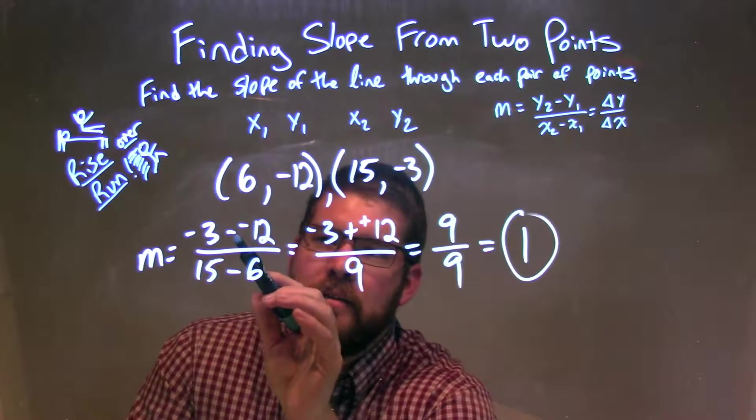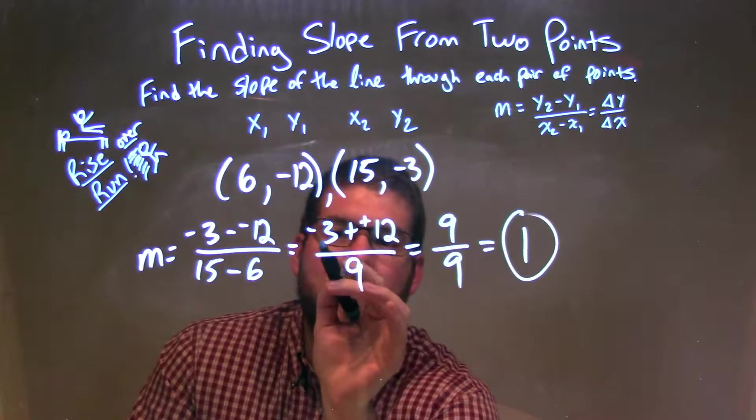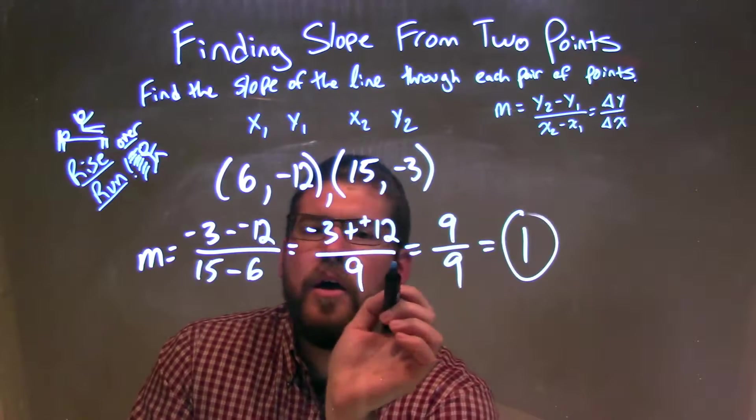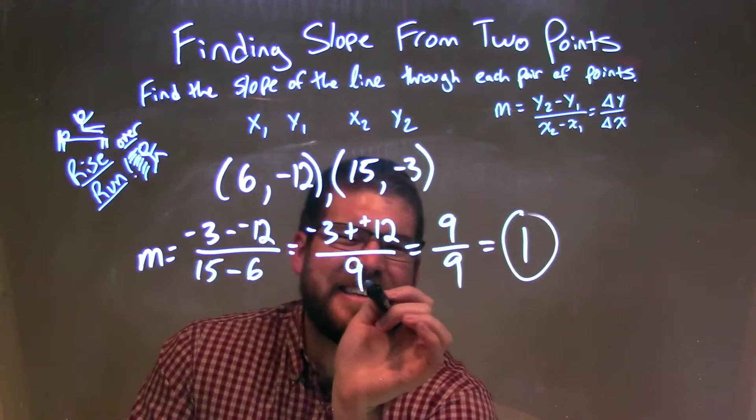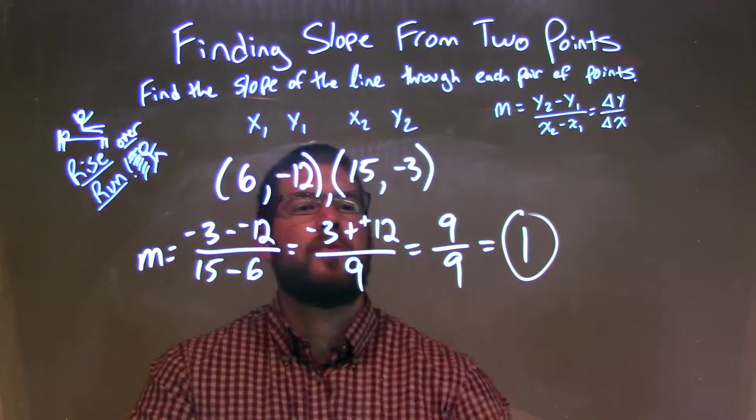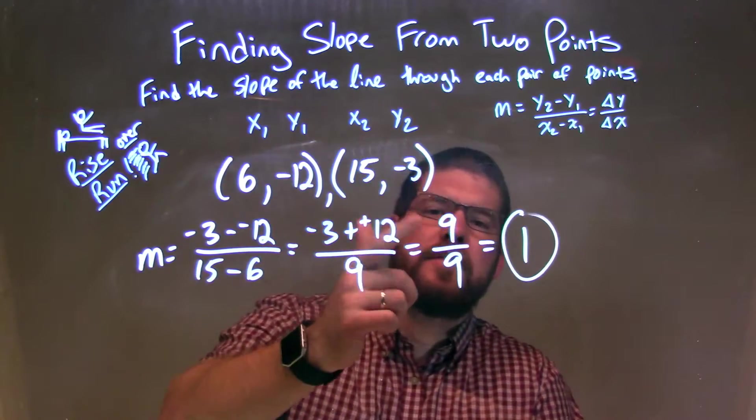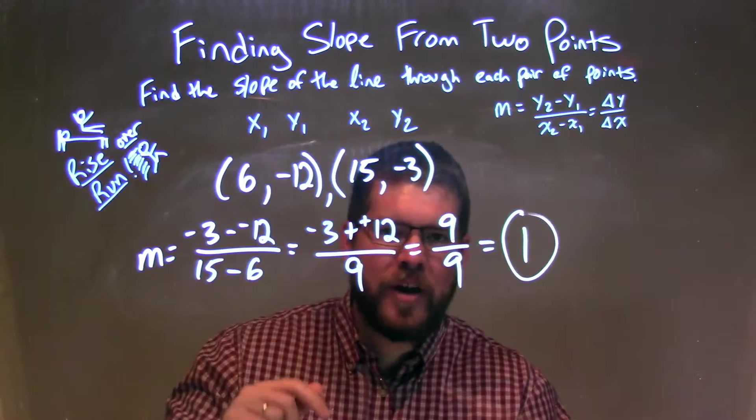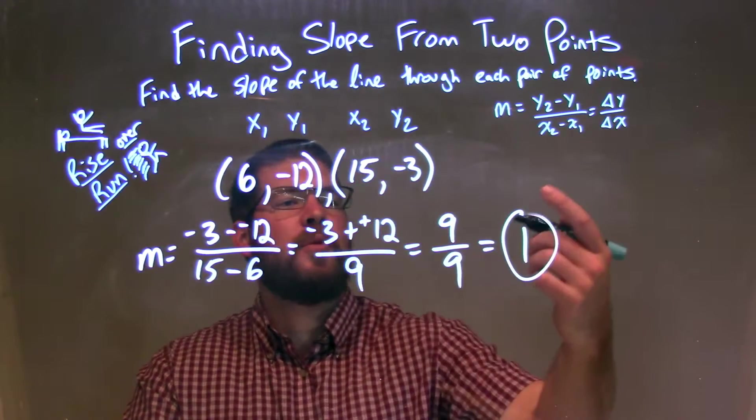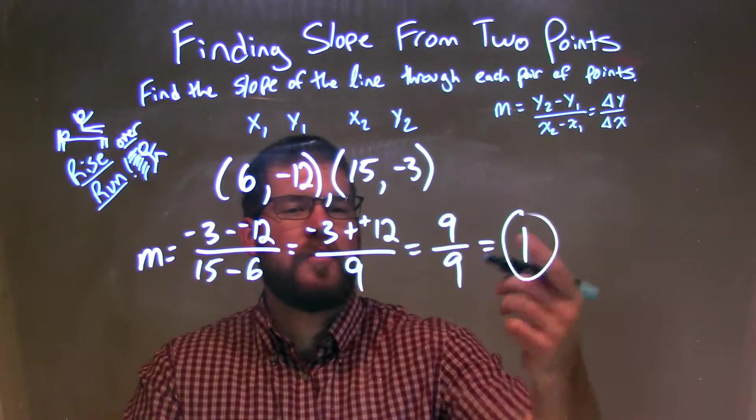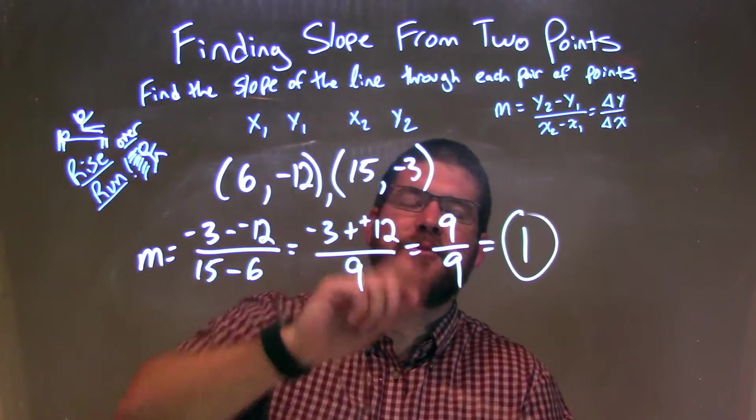I simplified the numerator to be, instead of subtracting a negative, adding a positive, giving me negative 3 plus 12, over the denominator of 15 minus 6 which is 9. Well, negative 3 plus 12 is a positive 9, so I have positive 9 over positive 9. Any number divided by itself is just 1, so our final answer here is just 1, our slope, and it's the slope between these two points.